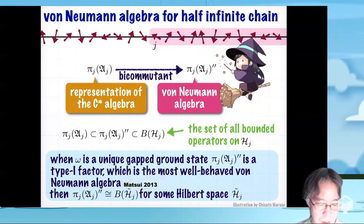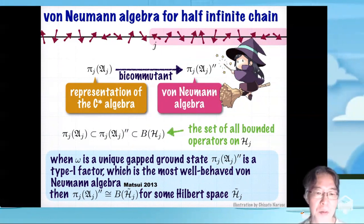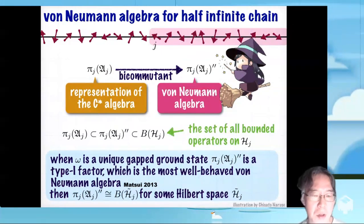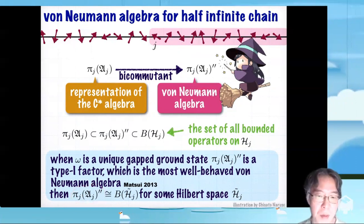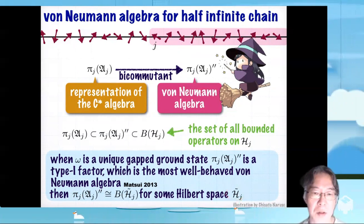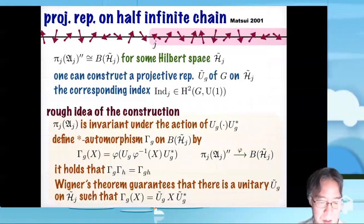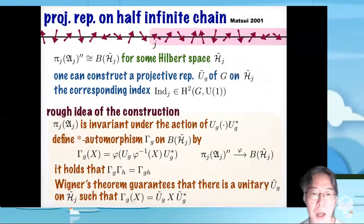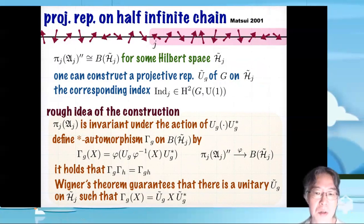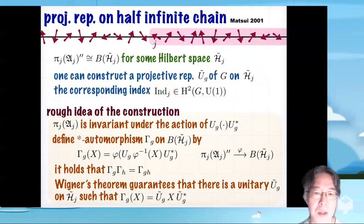Now we use the fact that Ω is a unique gap ground state. It was shown back in 2013 by Taku Matsui that when Ω is a unique gap ground state, then this von Neumann algebra πⱼ(ℛⱼ)'' becomes a type one factor. Type one factor is the most well behaved form of von Neumann algebra. It is well known from the general theory of von Neumann algebra that this type one factor is isomorphic to the set of all bounded operators on some Hilbert space ℋ̃. This is a new Hilbert space constructed through this isomorphism. We have a new Hilbert space. Then you can construct a projective representation Ũₐ of G on this new Hilbert space. And this gives a projective representation with non-trivial index indⱼ, which takes value in the second group cohomology. And this is nothing but the Ogata index.